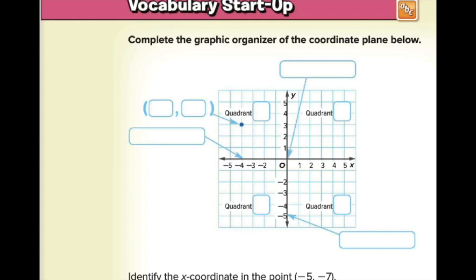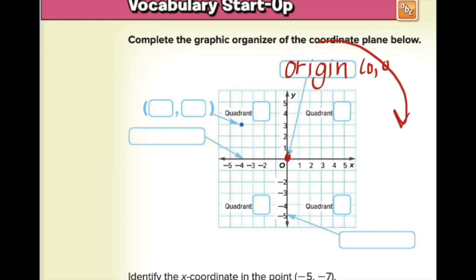Our first section is completing the graphic organizer of the coordinate plane. We'll work our way around, filling in our blanks. The first arrow points down to where we have (0, 0), where the x-axis and the y-axis intersect — that is called the origin. The origin is the beginning of our coordinate plane, at (0, 0).